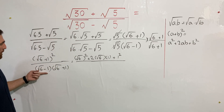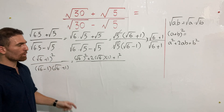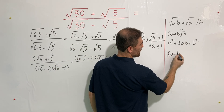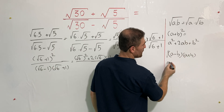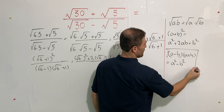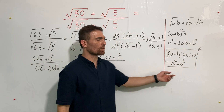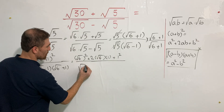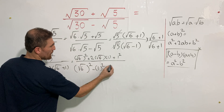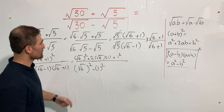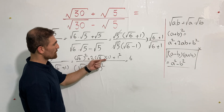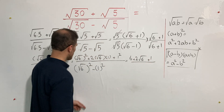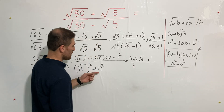For the denominator, square root of 6 minus 1 times square root of 6 plus 1 — I'm going to use the identity (a − b)(a + b) = a² − b². So that gives us (square root of 6)² minus 1², which is 6 minus 1. For the numerator, (square root of 6)² is 6, twice the product of square root of 6 and 1 is 2 square root of 6, and 1² is 1.